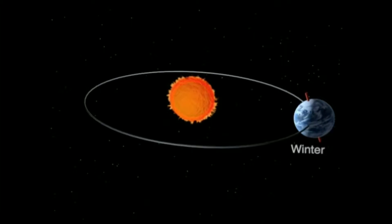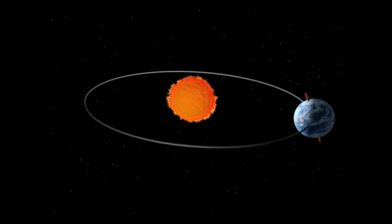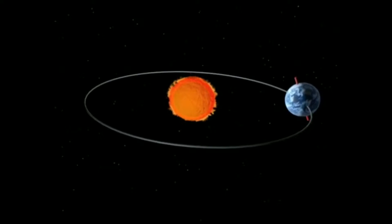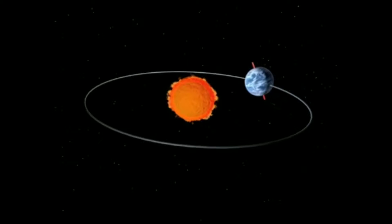The South Pole is the other point where Earth's axis of rotation intersects its surface in Antarctica. Earth rotates once in about 24 hours with respect to the Sun, but once every 23 hours, 56 minutes, and 4 seconds with respect to other distant stars.